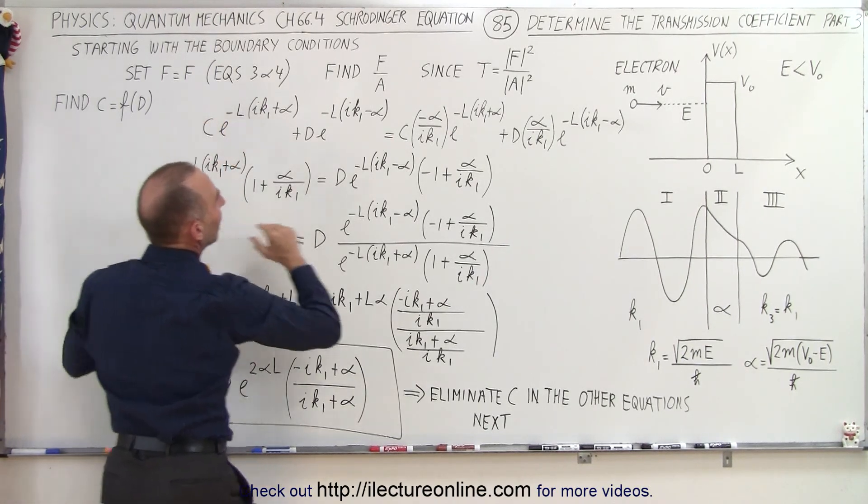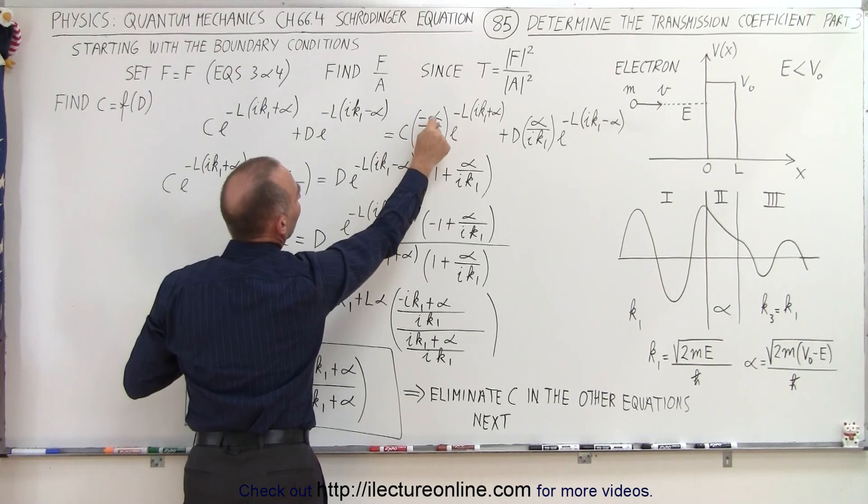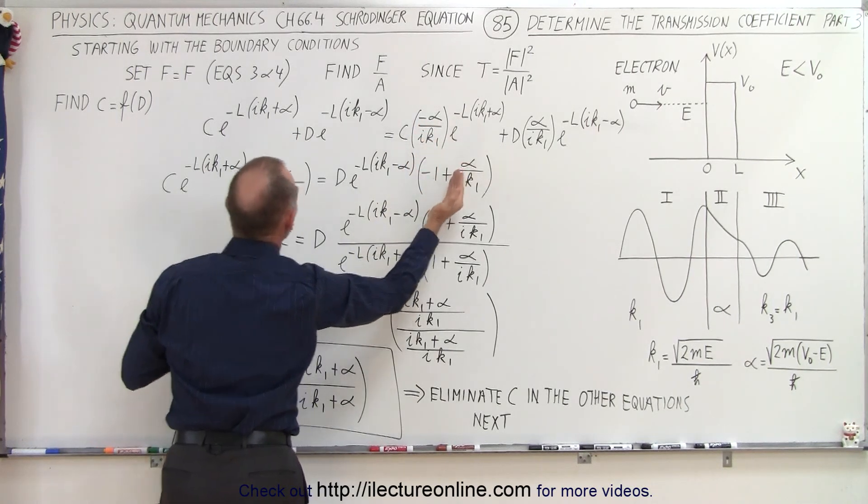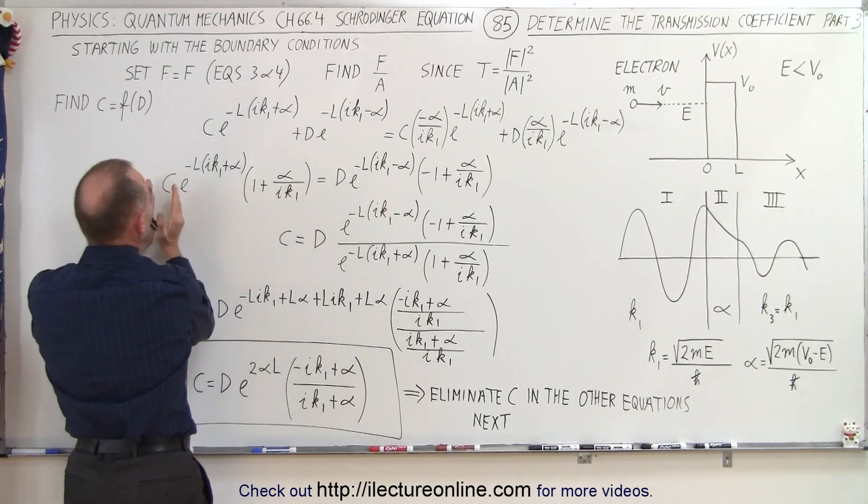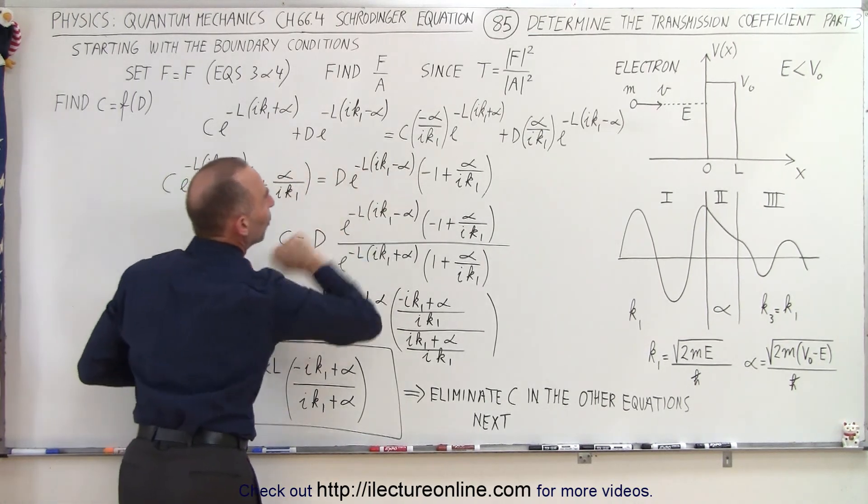We have a coefficient of 1 here, and we have a coefficient of minus alpha over IK1. So we can also factor that out, 1 plus alpha over IK1, and then we multiply it times C, and we do the same on the right side.